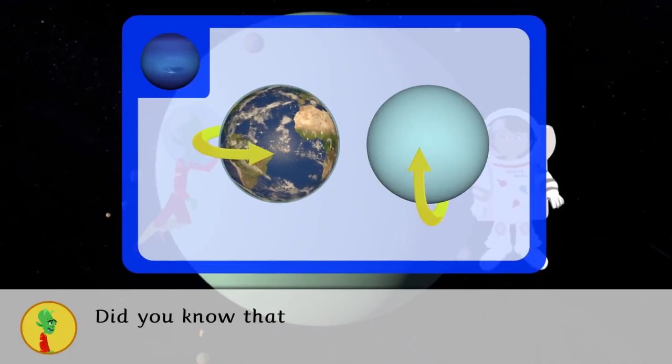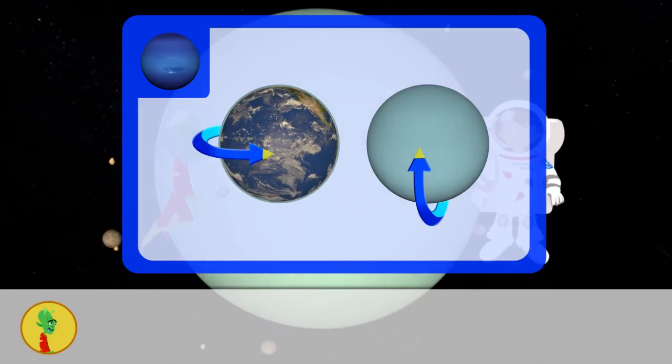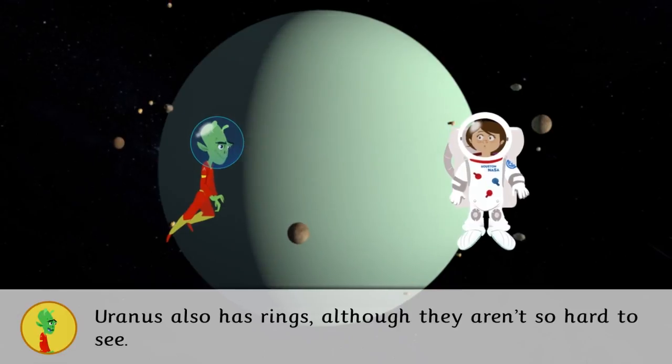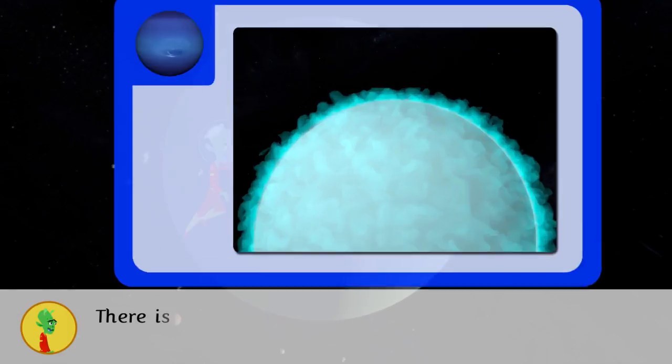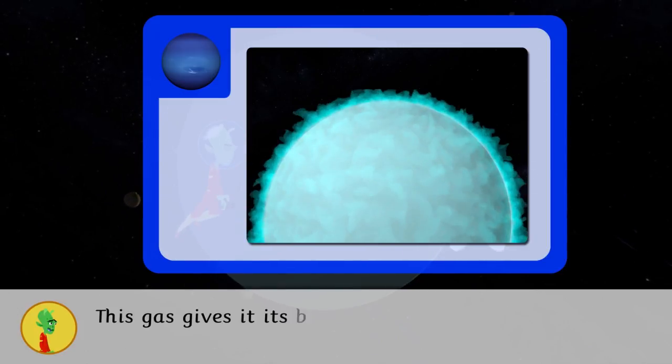Did you know that Uranus rotates vertically? The other planets all rotate horizontally. Uranus also has rings, although they are hard to see. There is methane in Uranus' atmosphere that can be used as fuel. This gas gives it its blue colour.